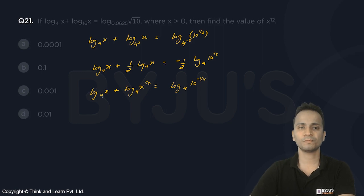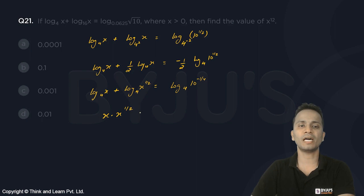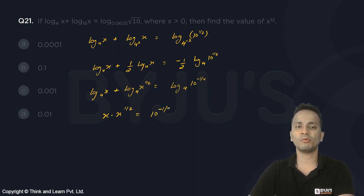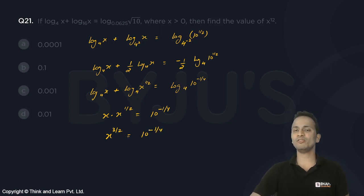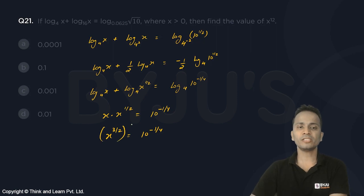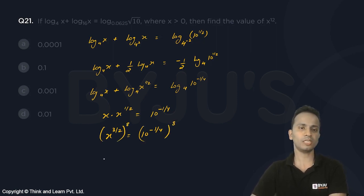Combining the left side: log of x times x raised to the power 1/2, which is x raised to the power 3/2, equals 10 raised to the power minus 1/4. Since we need the value of x raised to the power 12, we raise both sides to the power 8.